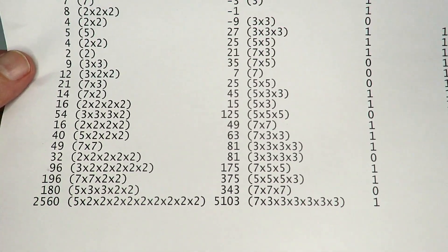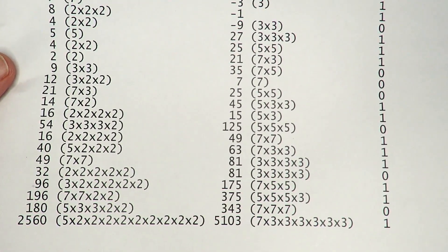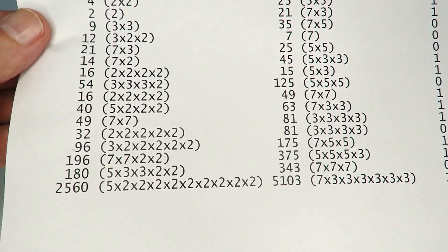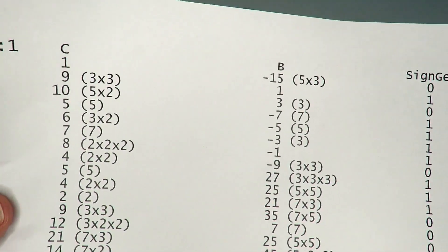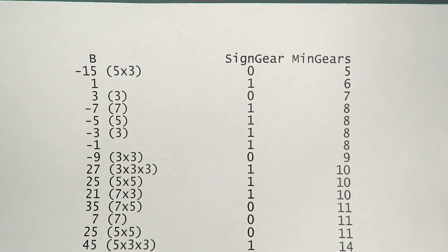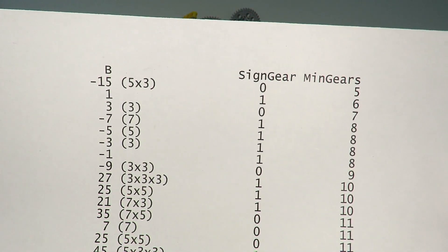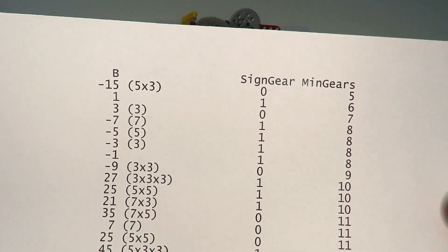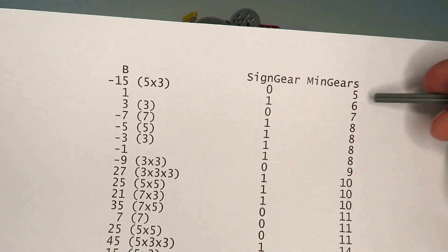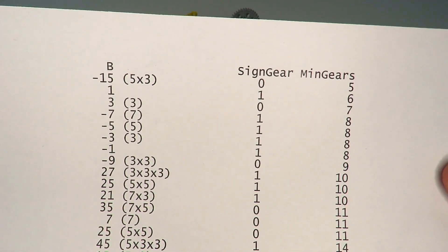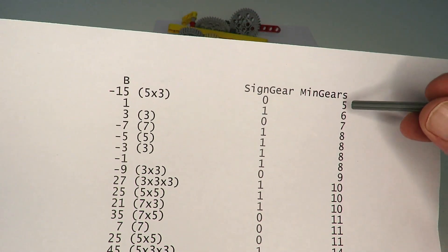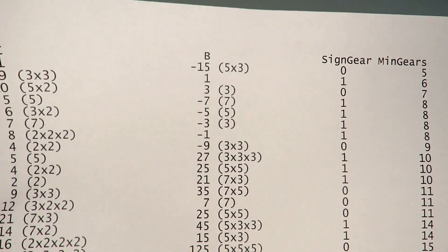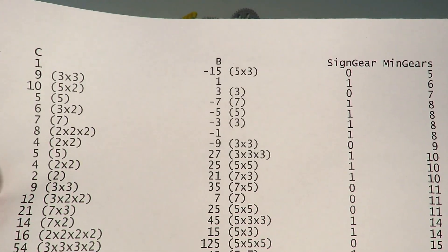One thing to note is that the number of solutions is not as great as I thought it might be. At the bottom there are very large numbers, and at the top we have pretty much the optimal solutions in terms of minimizing the number of gears. Minimizing gears doesn't necessarily mean it's the best solution for your application — for some reason you might want to use other solutions involving six or seven gears, depending on physical constraints or the particular gears you have available.